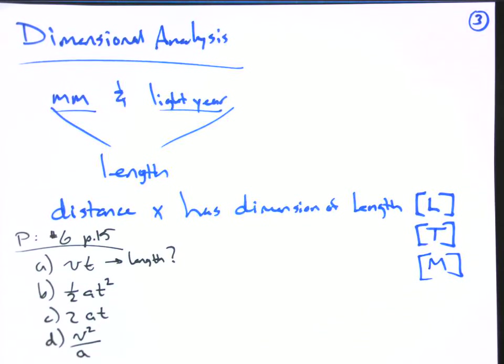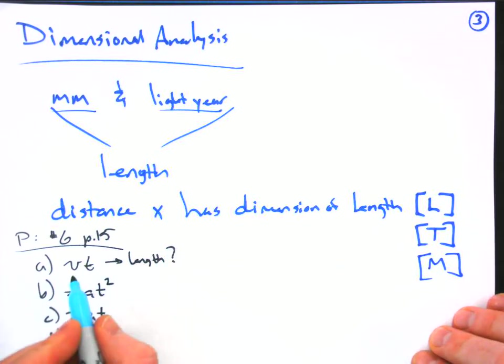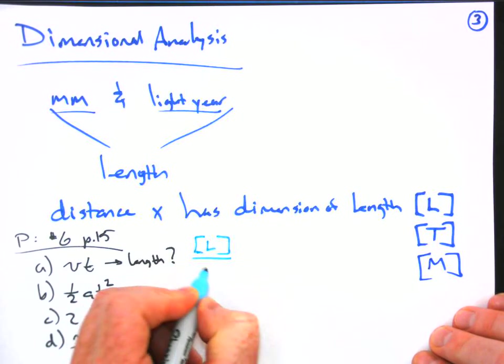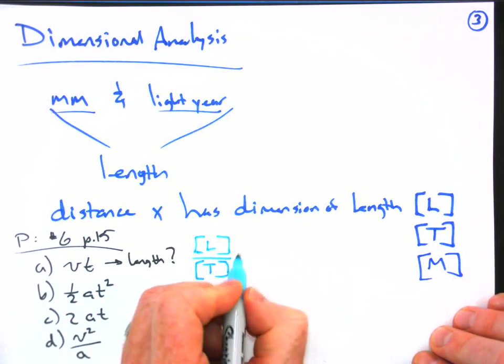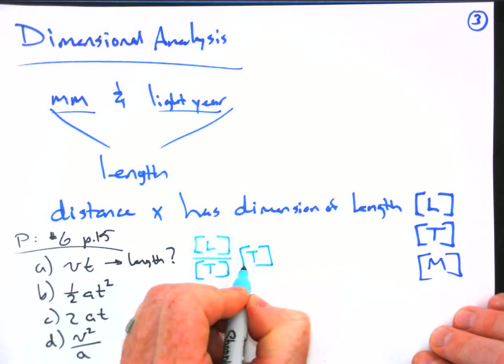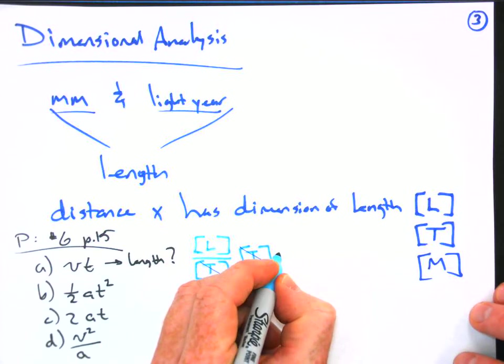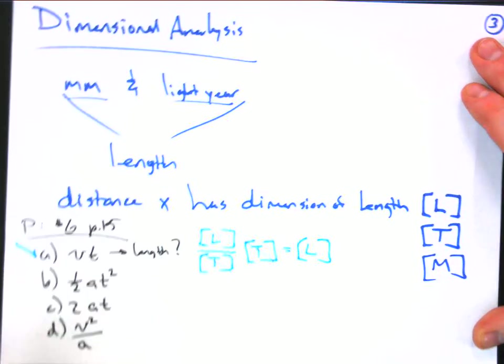Okay, so our job is to figure out do these have the same dimension as length? Do they boil down to the same as that? Well, velocity is a length measurement divided by a time measurement. So now time is a time measurement. So we have this times that. And of course, what you can see is the time dimensions cancel out. And look what we're left with. So yes, that checks, that works.